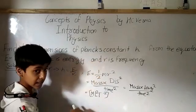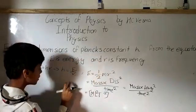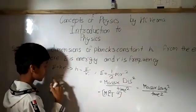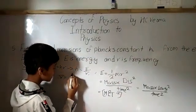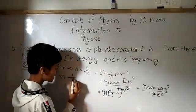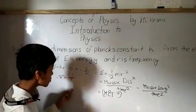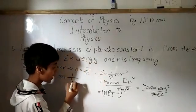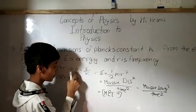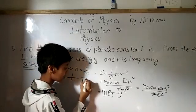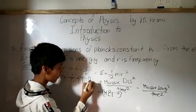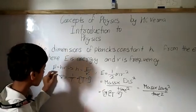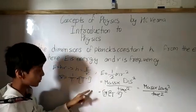Now we need the dimensional formula for nu, which is frequency. We know the frequency formula is nu equals 1 by T, meaning it is the reciprocal of the time period. Since 1 is dimensionless, only T remains. As T comes from denominator to numerator, its power becomes negative. So the dimensional formula for frequency is T to the power minus 1.